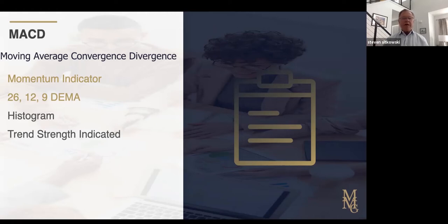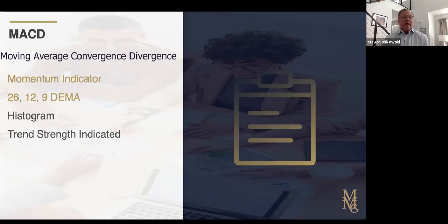You take the 12-day exponential moving average, you subtract from it the 26-day exponential moving average, and then you compare that to the nine-day exponential moving average. The good news is you don't have to do any of the math — it's all done for you.